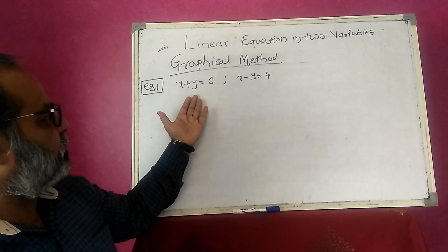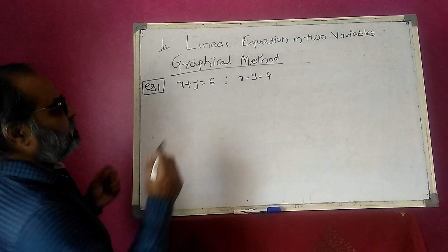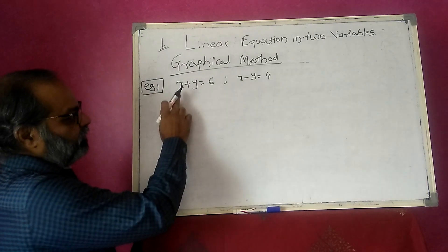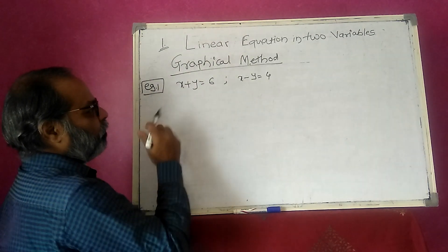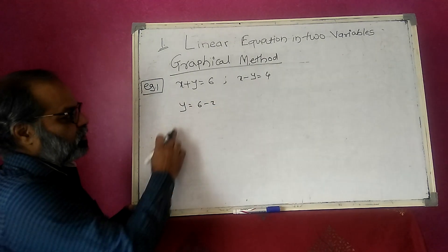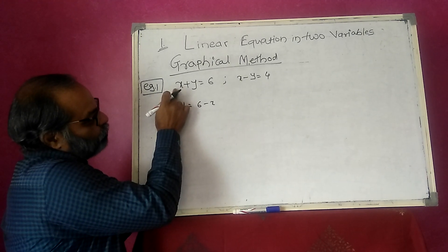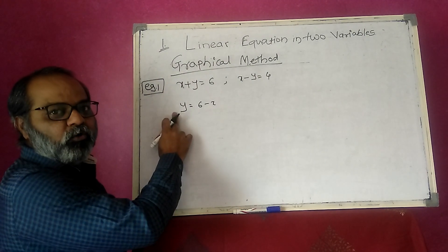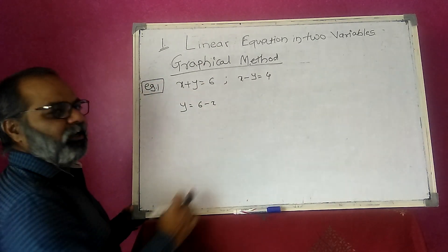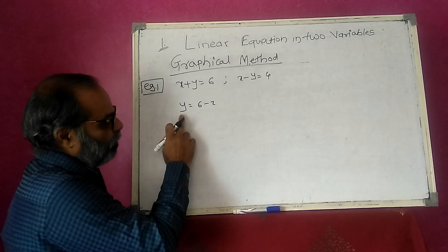So by solving this by graphical method, we are converting the equation into the form of y. That means y is equal to 6 minus x. So we are converting x plus y is equal to 6 to y is equal to 6 minus x. When solving by graphical method, convert any linear equation into the form of y.